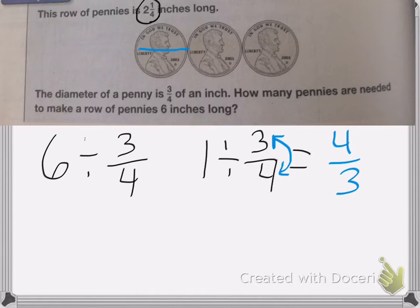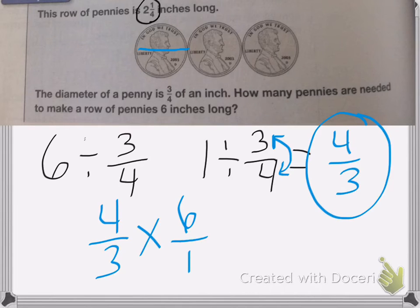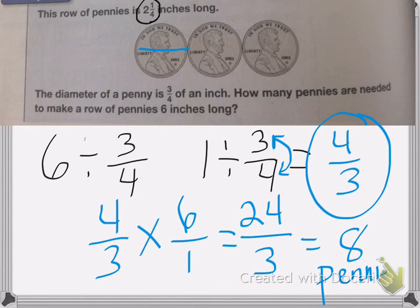Now that we have how many pennies are in 1 inch, now I can figure out how many we need in 6 inches by multiplying 4 thirds by 6 over 1. 4 times 6 is 24. 3 times 1 is 3. So my answer is that I need 8 pennies to make 6 inches.